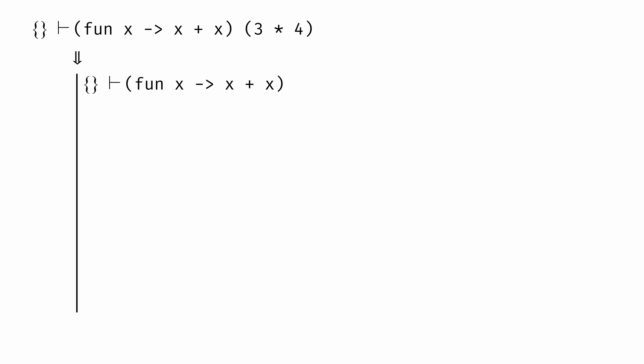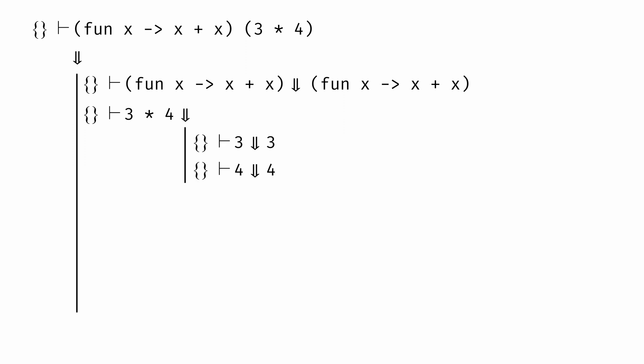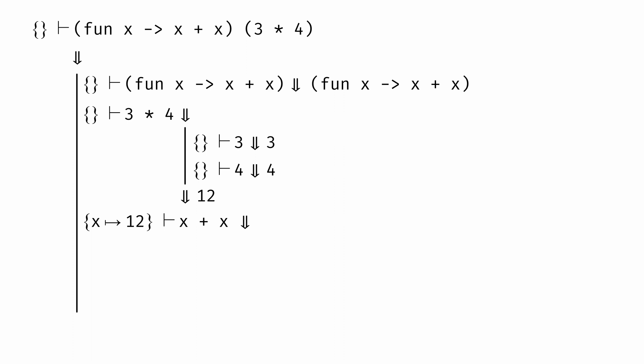We can look at another example derivation showing how we would evaluate function application in the environment semantics. We'd first evaluate the function expression — it's just a function, so it evaluates to itself. Then we evaluate the argument expression. It's the result of a multiplication, so we evaluate the left side then the right side to get its value, which is 12. Now we evaluate the body of the function, x plus x, in a different environment where the empty environment has been augmented so that x maps to 12. Each time we evaluate x, we look it up in the environment and get 12, for a sum of 24.